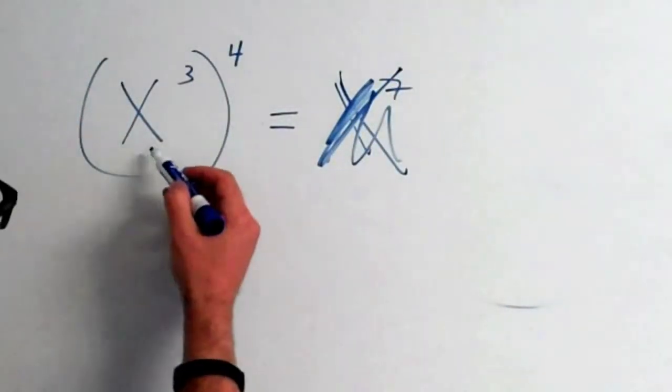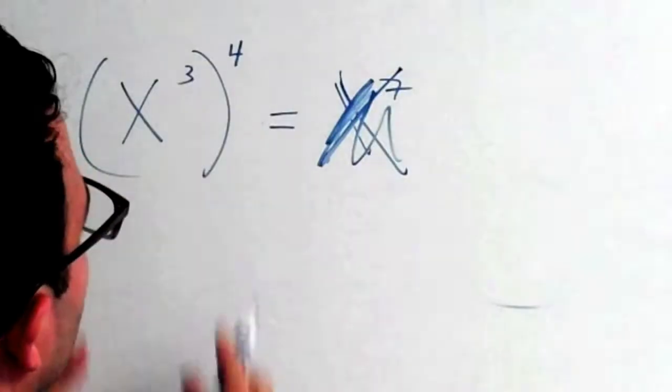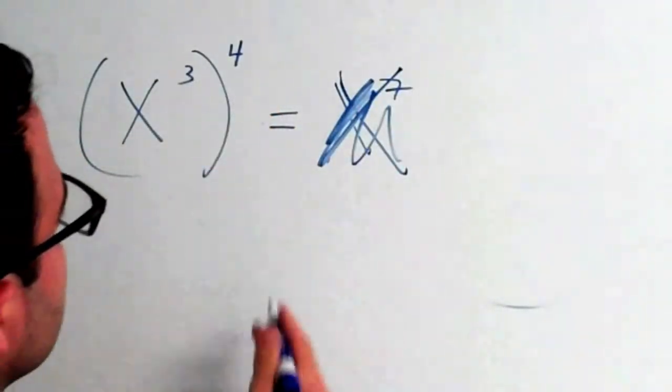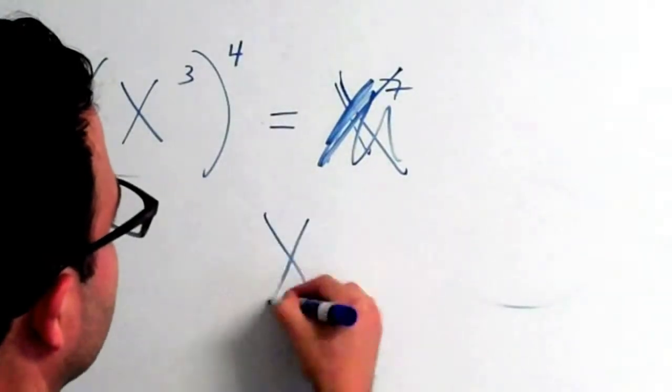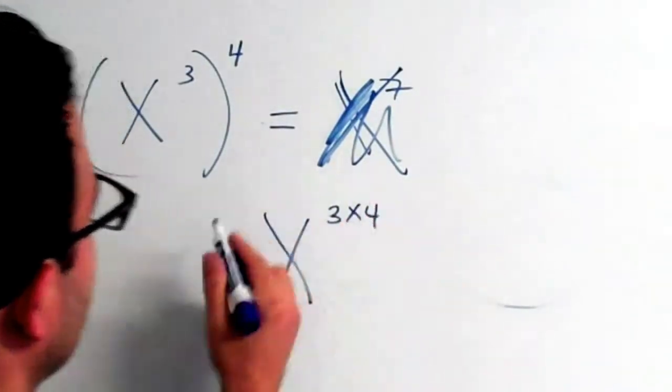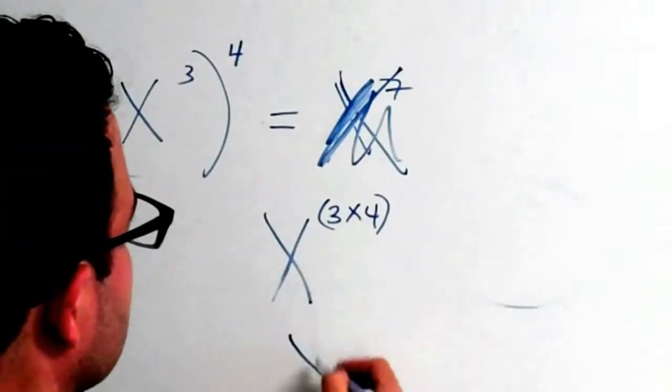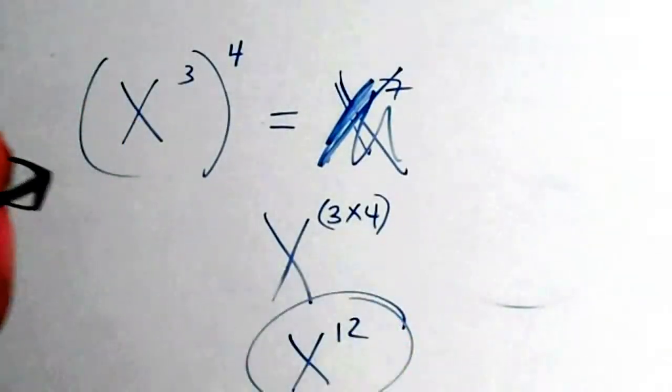If you have an exponent and you're raising it to another exponent, so if you have x cubed all raised to the 4th, that's when you multiply the exponents. It's the same as x to the 3 times 4, or x to the 12th power.